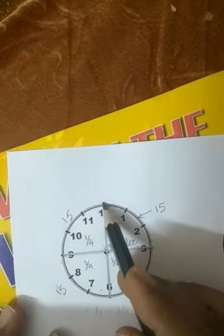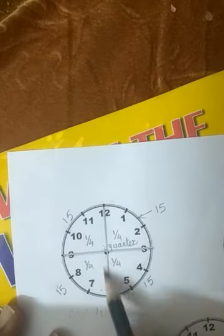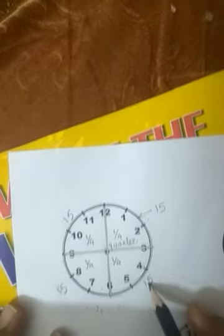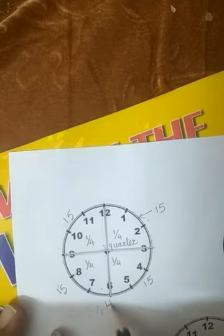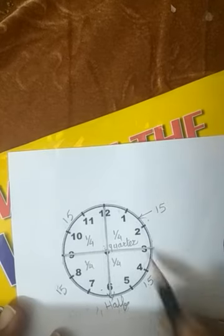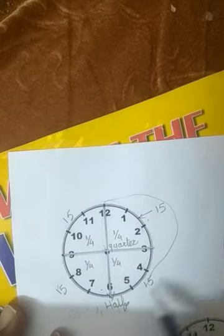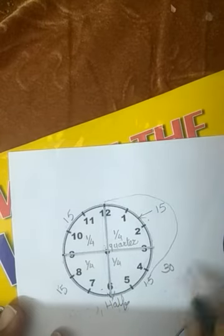Now look — this one is the half portion of the clock. And this half portion is of 15 plus 15. So the half position will come here.